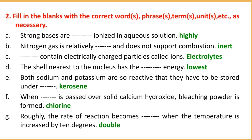Number F: When chlorine is passed over solid calcium hydroxide, bleaching powder is formed — CaOCl2. Number G: Roughly, the rate of reaction becomes double when the temperature is increased by 10 degrees.